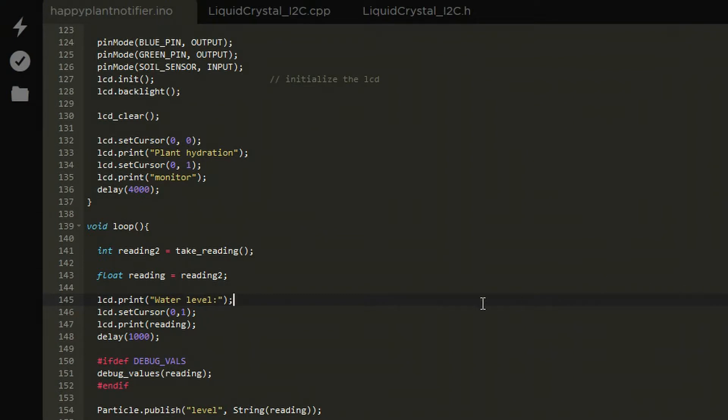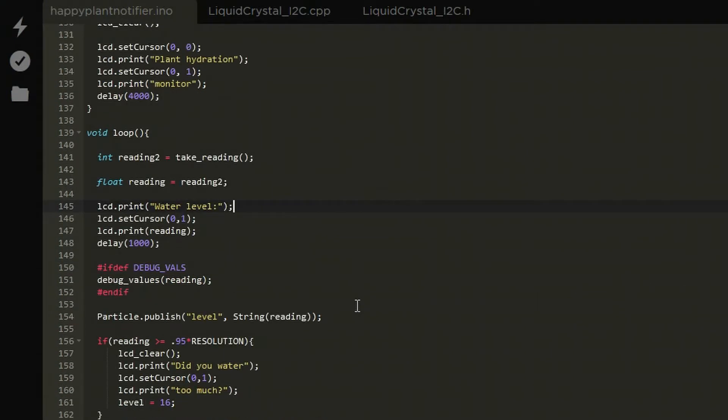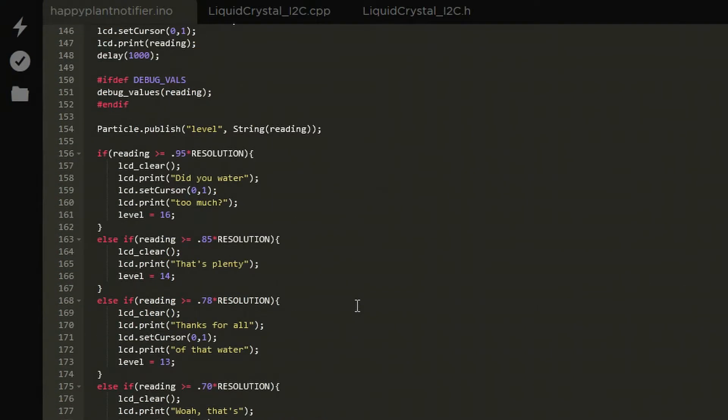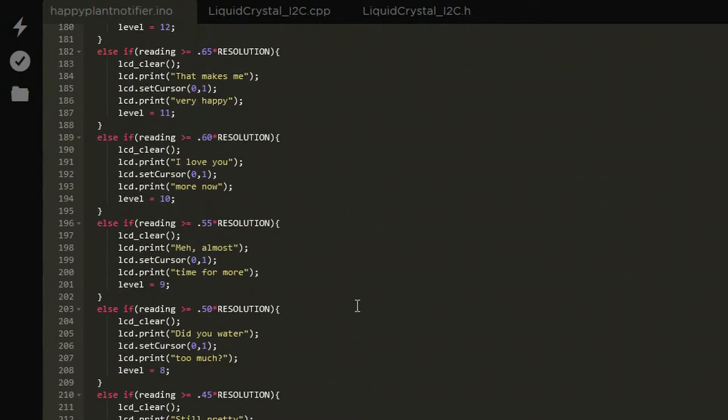The code is set up such that when the moisture dips below 15%, the photon sends an event called water, which then triggers an IFTTT applet.